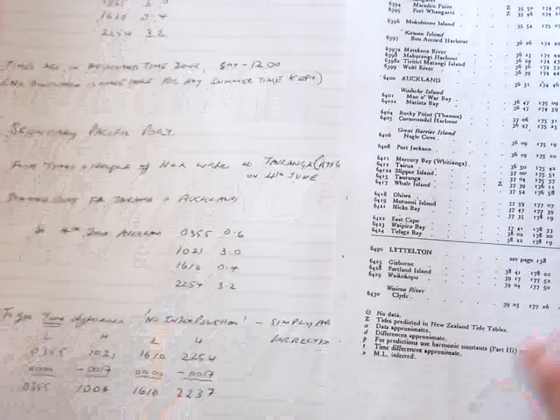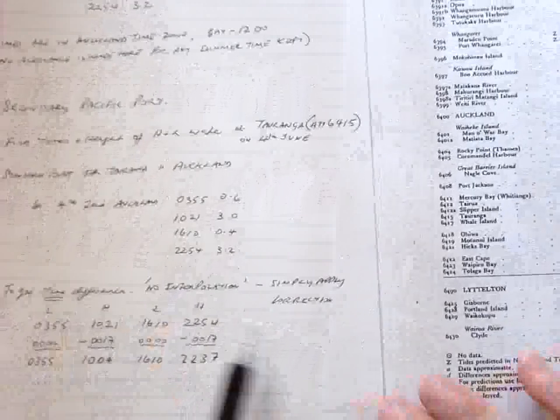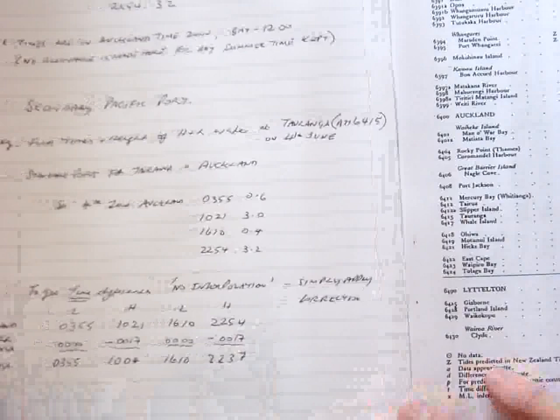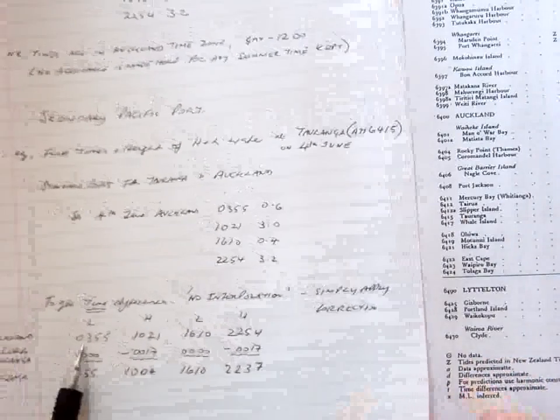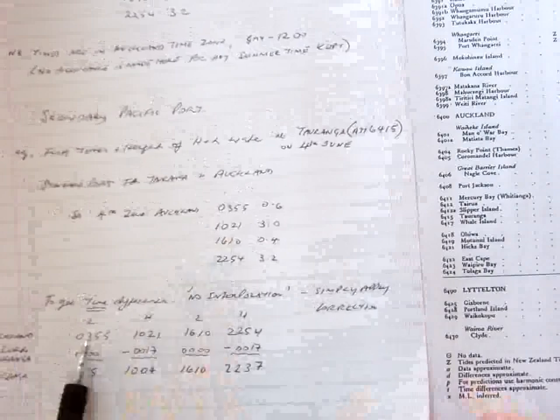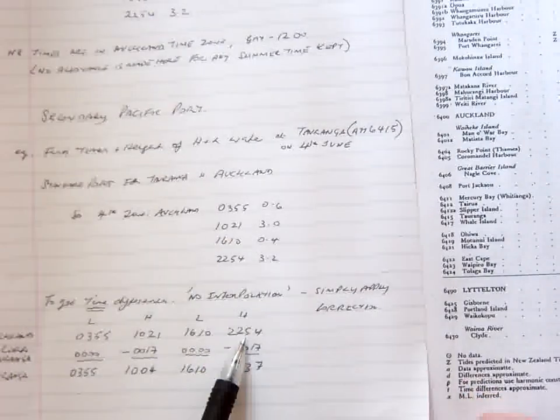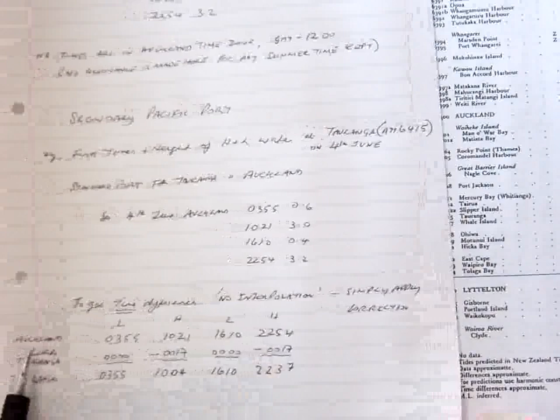What we then do, is we simply apply the correction for Turanga. So there's no interpolation to do. So we write down the times that we've got here, 0355, 1021, 1610, 2254. They are the times for Auckland.